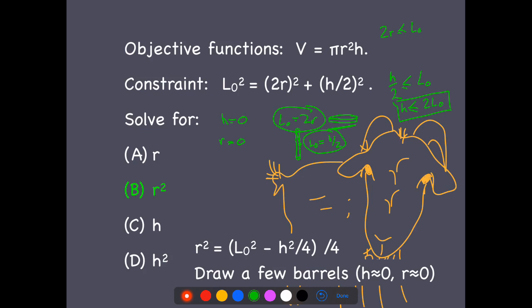They're nonsense barrels, but at least they sort of, in some abstract sense, they could be thought about, at least. And so this constraint gives me a constraint on r. r has to be less than or equal to L₀ over 2. But I have to write that in terms of h.